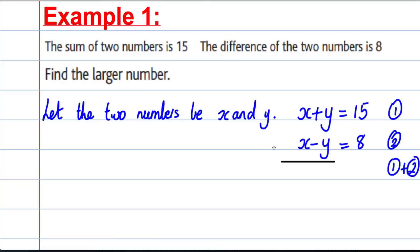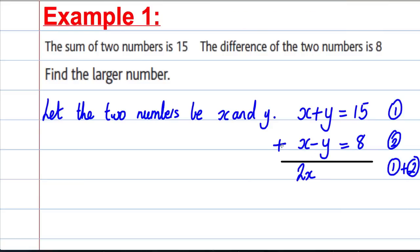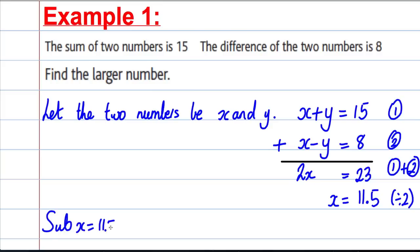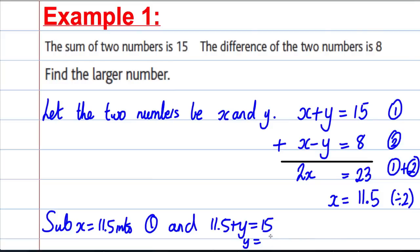If we add equation 1 and equation 2, draw a line and remember to put your plus sign so you remember what you're doing. x plus x is 2x, y add negative y is nothing, 15 add 8 is equal to 23. Therefore, x divided by 2 is 23 divided by 2, which is 11.5. To get y, sub x equals 11.5 into equation 1 and you get 11.5 plus y equals 15, so y must be 15 take away 11.5, which is 3.5.